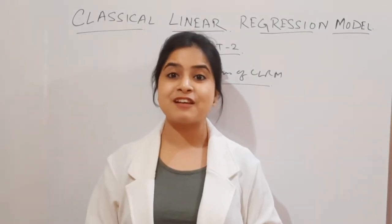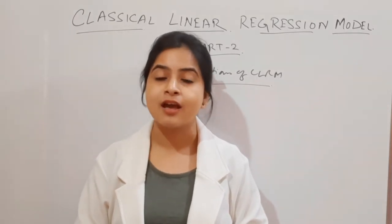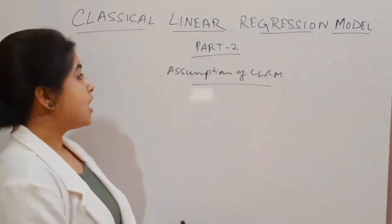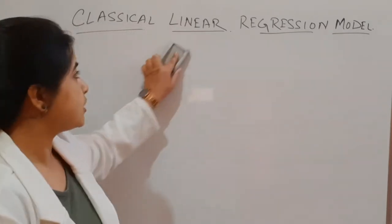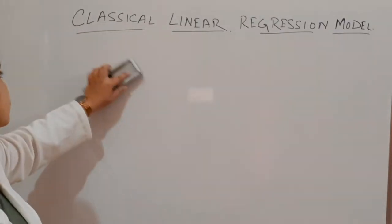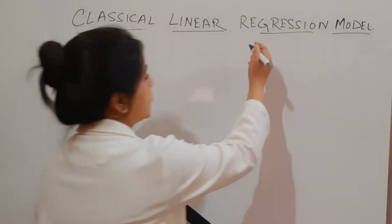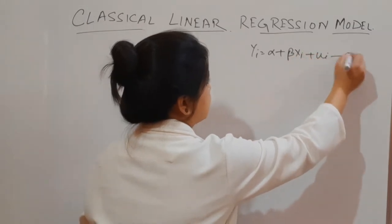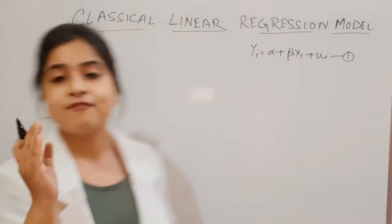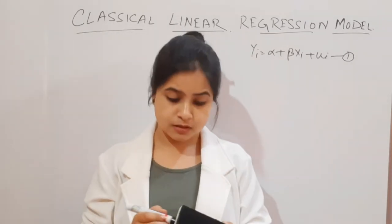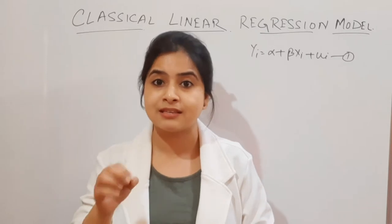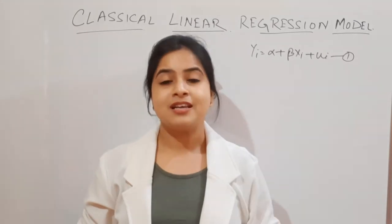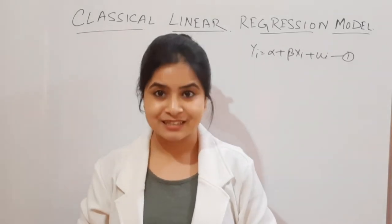Hello everyone, welcome to Economicspedia and welcome to the second part of CLRM where we are going to focus on the assumptions of the classical linear regression model. Let me rewrite the model that we were focusing on in Part 1 — we marked it as equation number 1. If anyone is interested in our first session where we discussed the basic concepts of CLRM, you can click on the card appearing on your screen.